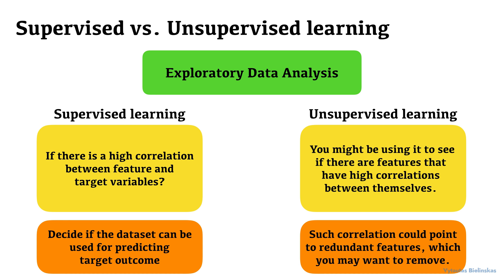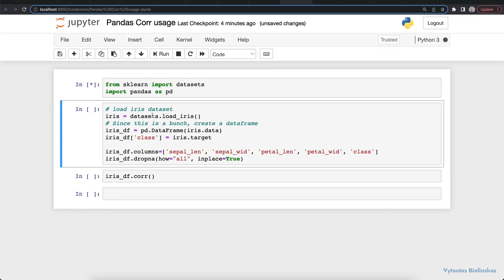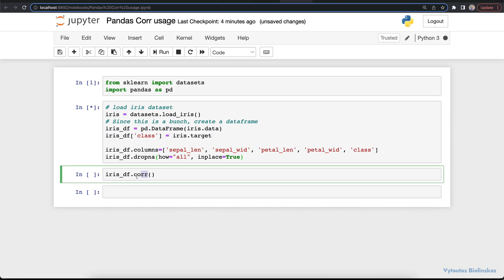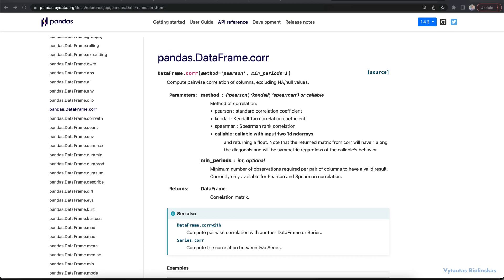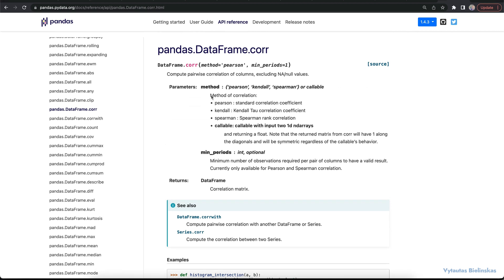Most folks new to data science would find themselves using the pandas built-in correlation function. It is a pandas dataframe core as shown here. If you look at the documentation for the function, by design it has minimal configuration. It allows you to change the method by which you calculate correlation.